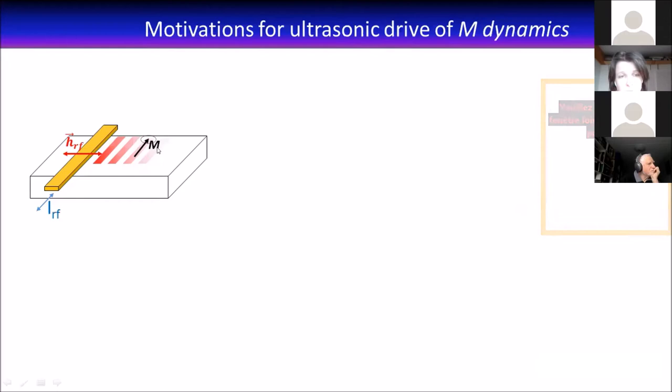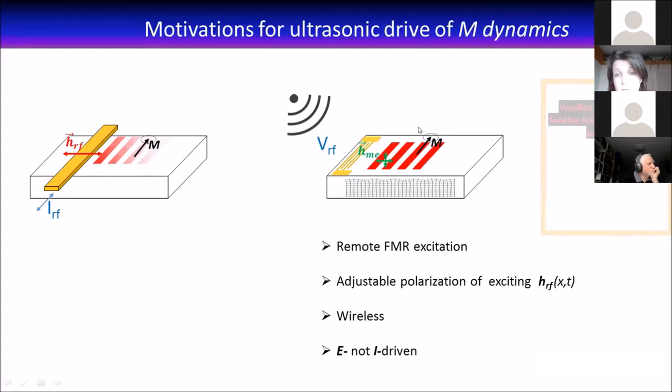Instead, the idea here was to excite a surface acoustic wave that would excite in its wake the ferromagnetic resonance. Because acoustic waves are very weakly damped, you have potentially remote FMR excitation. You know very well the XYZ components of your exciting field because it's just this magnetoelastic field that you can calculate easily. This is driven by an electrical field, not a current, so potentially dissipates less energy and is wireless, although probably less efficient. This is appealing for applications.